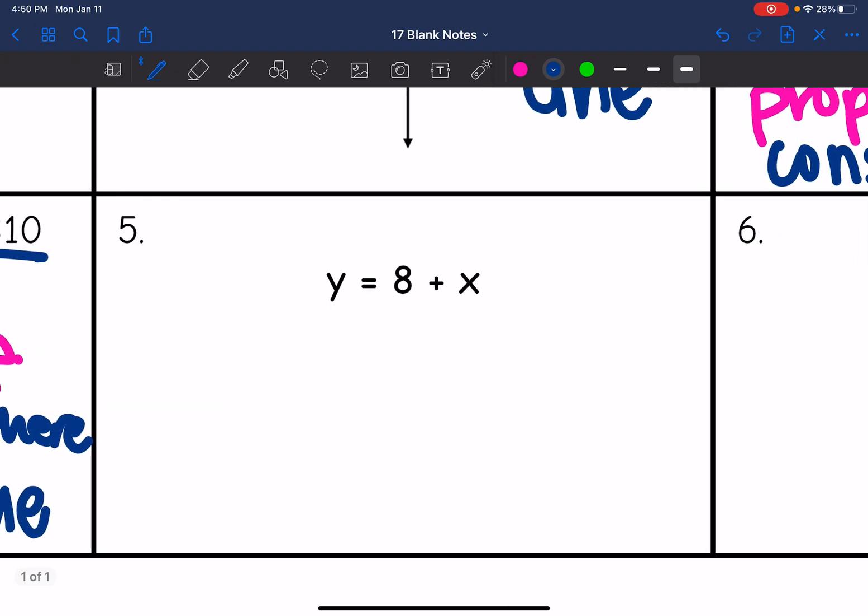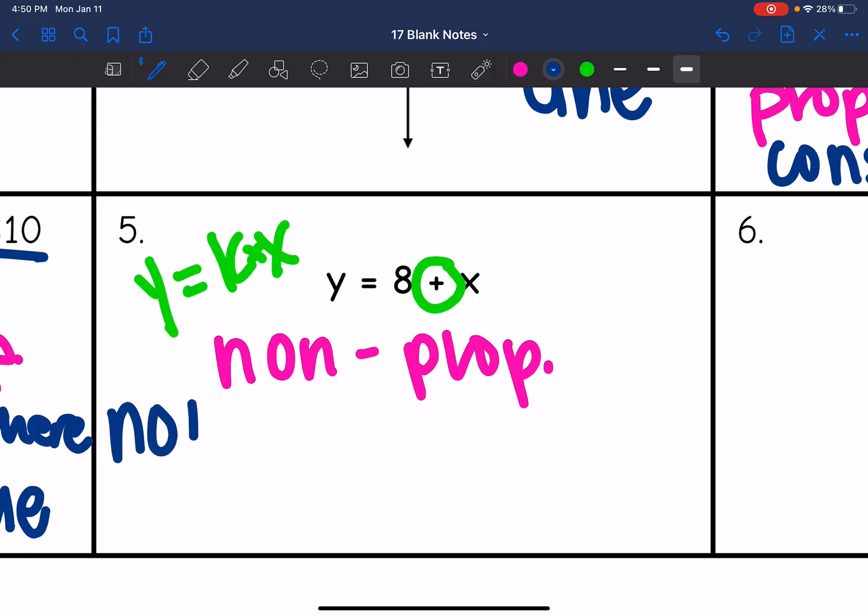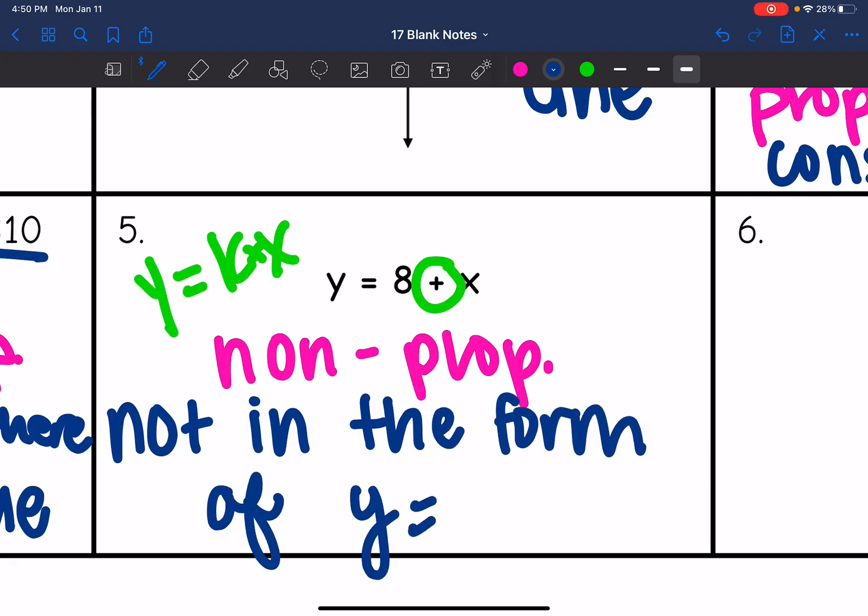Number five. y equals 8 plus x. So it almost looks like it's in the form of y equals kx. But remember when we have two things next to each other like that, it means multiplication, not addition, like we have going on here. So this one is non-proportional because it is not in the form of y equals kx.